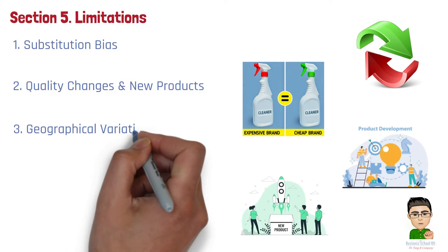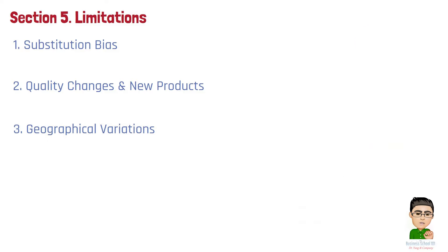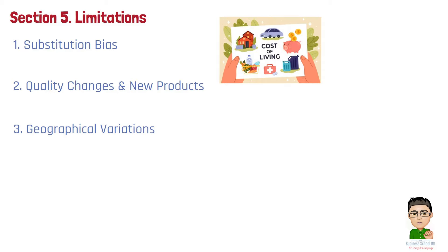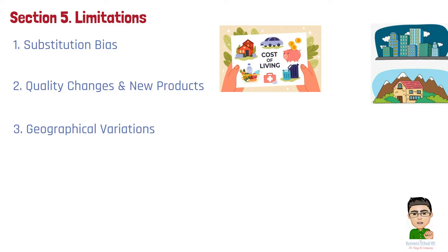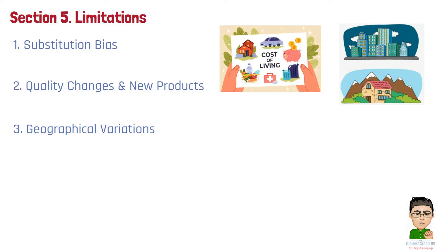Number 3. Geographical variations. The CPI is often calculated at a national level, which may not reflect the cost of living variations across different regions. Urban areas might have different price levels than rural areas, and this discrepancy is not always captured well by the CPI.